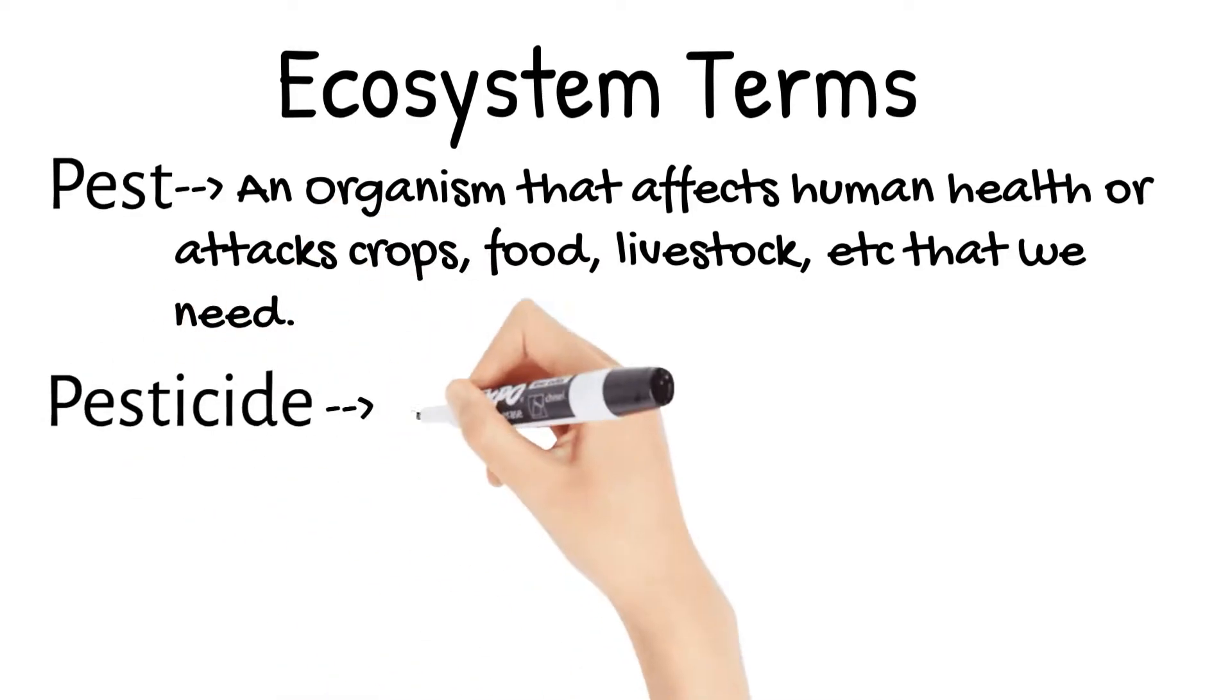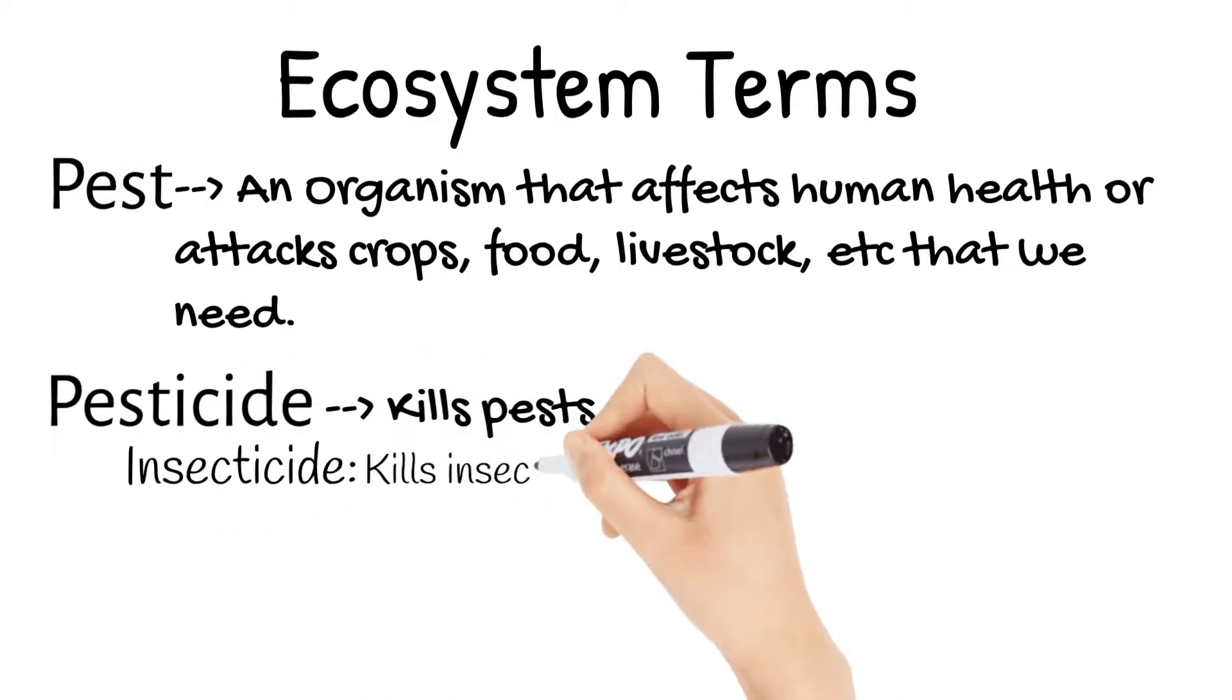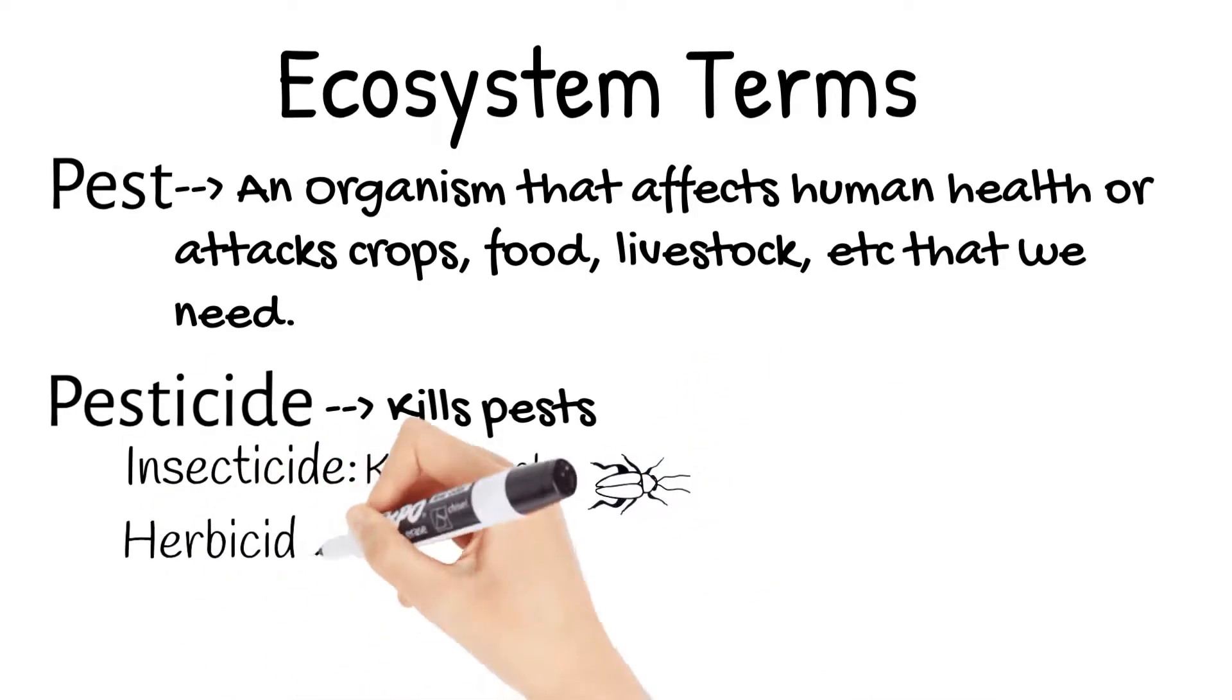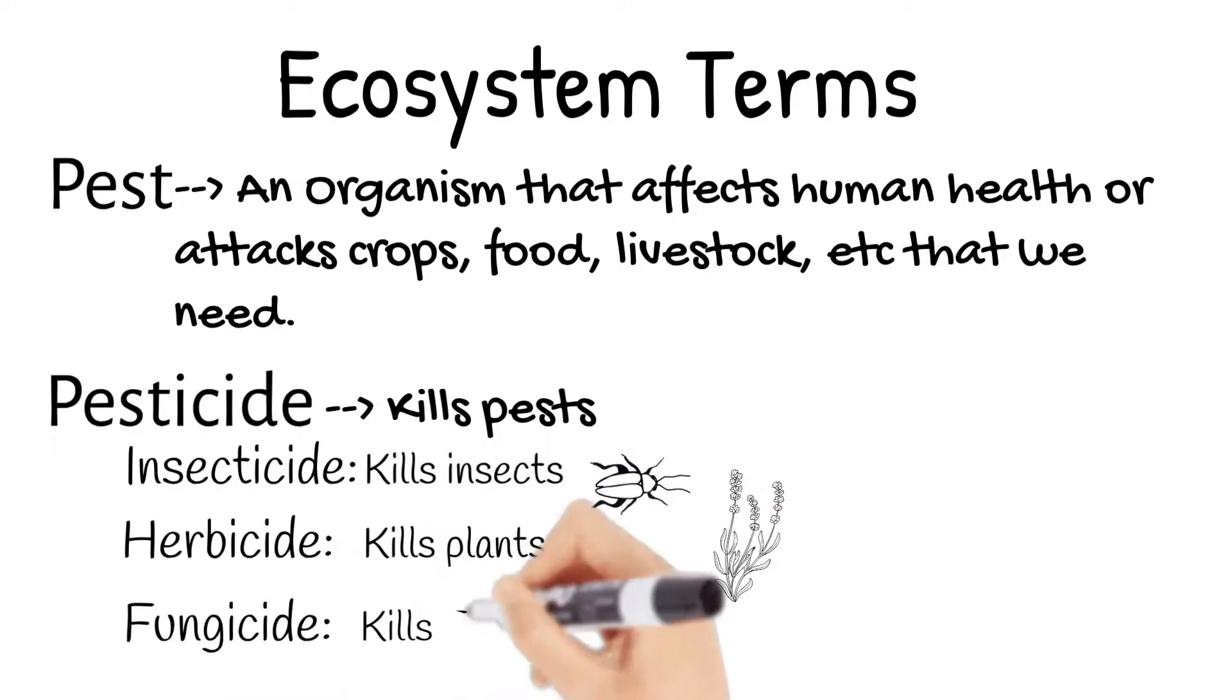A pesticide kills pests. Some types of pesticides include insecticide, which kills insects, herbicide, which kills plants, and fungicide, which kills fungi.